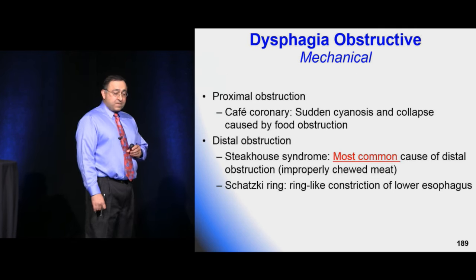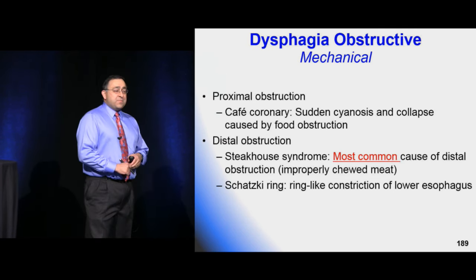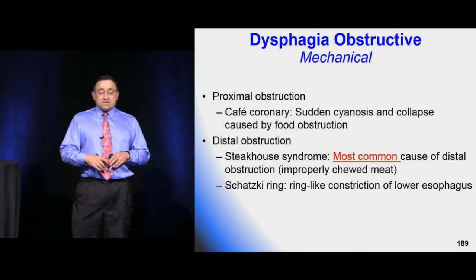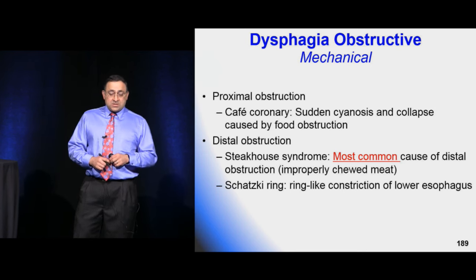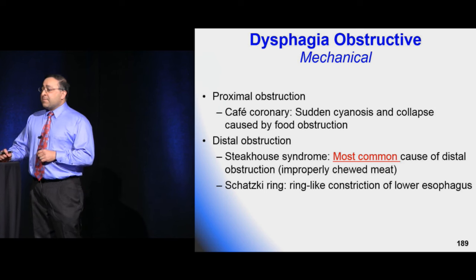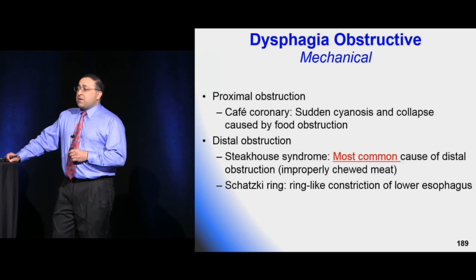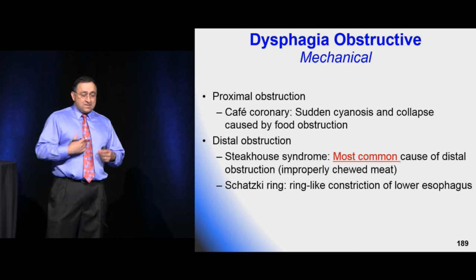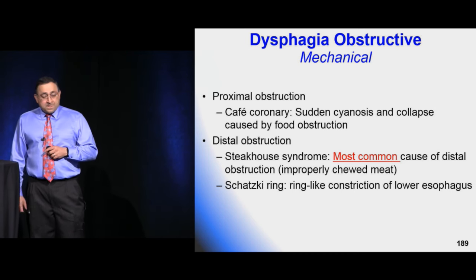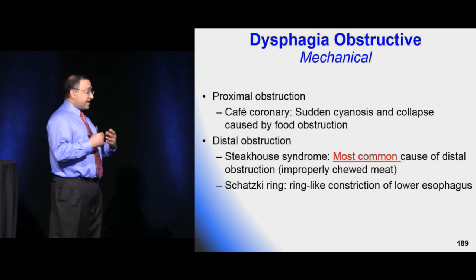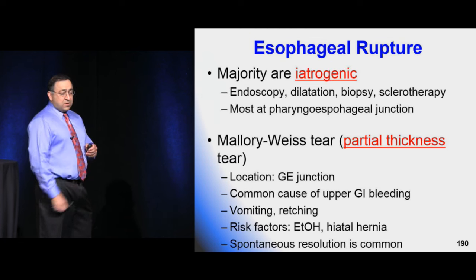More common causes include cancer, polyps, thyroid goiters producing obstructions, and Zenker's diverticulum. There are proximal and distal obstructions — "café coronary" refers to sudden cyanosis and collapse from food obstruction. More commonly there are distal obstructions, often related to improperly chewed meat. Also the Schatzki's ring — ring-like constrictions in the lower esophagus — so there's a variety of things causing this, not always cancer.